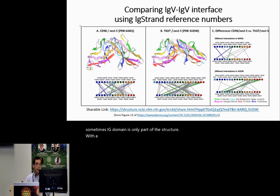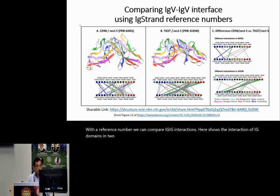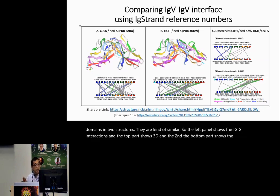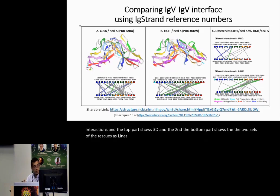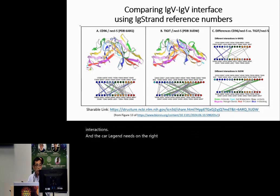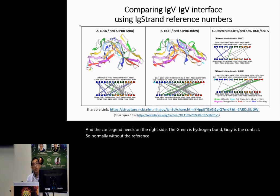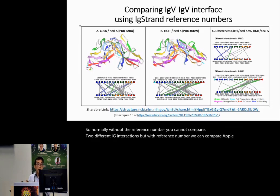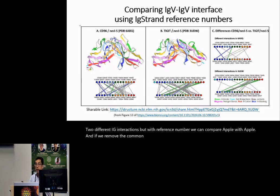With the reference number, we can compare IG-IG interactions. Here are the interactions of IG domains in two structures — they are similar. The left panel shows the IG-IG interactions: the top part shows 3D, and the bottom part shows two sets of residues as nodes in two lines, with lines between nodes representing interactions. Green is hydrogen bond, gray is contact. Without the reference number, you cannot compare two different IG-IG interactions, but with reference numbers we can compare apple to apple. Removing common interactions, the right side shows the different interactions between the two IG-IG pairs.